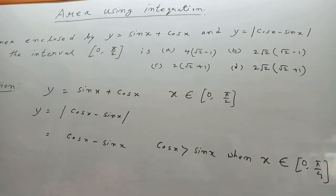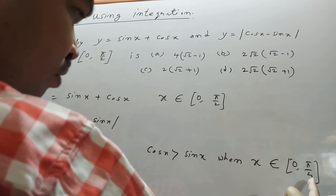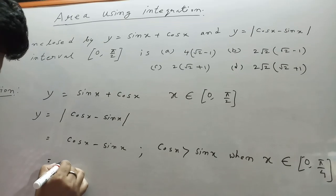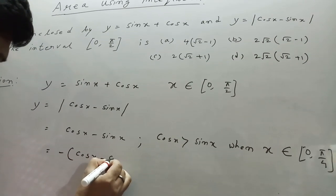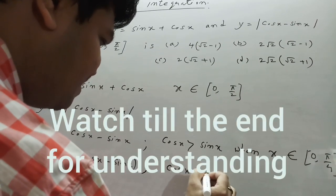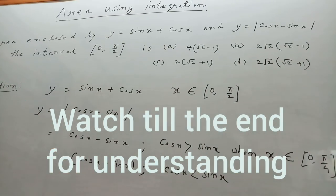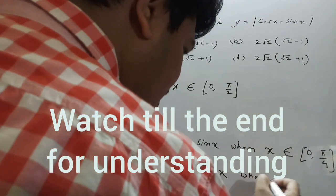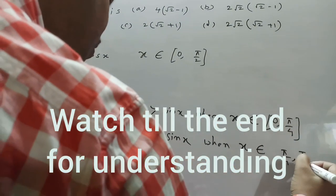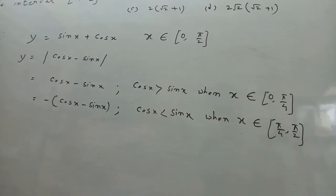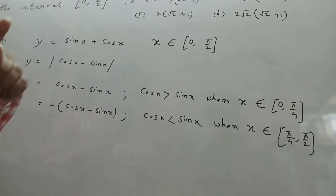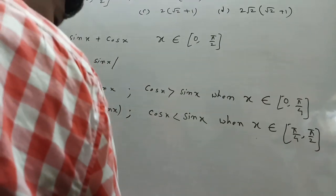When x lies between 0 to π/4, the value of cos x is greater than sin x. And the modulus equals -(cos x - sin x), i.e., sin x - cos x, when x belongs to π/4 to π/2, because when x lies between π/4 to π/2, the value of cos x will be less than the value of sin x.